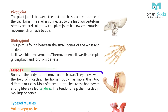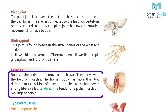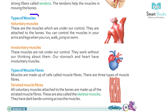Muscles: bones in the body cannot move on their own. They move with the help of muscles. The human body has more than 600 different muscles. Most of them are attached to the bones with strong fibers called tendons. The tendons help the muscles in moving the bones.